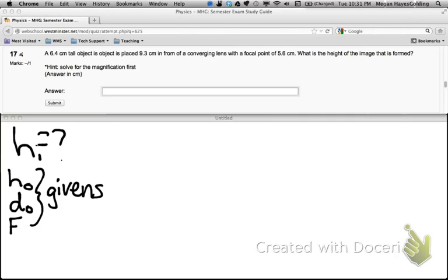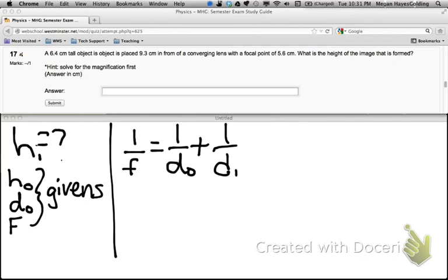Okay, now what can I do with that? Well, I'm going to start with the lens equation, where 1 over the focal length is 1 over the object distance plus 1 over the image distance. From there, you can get your image distance.